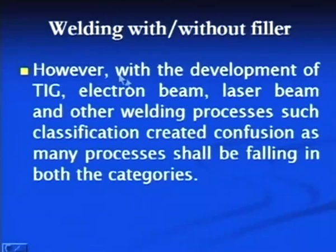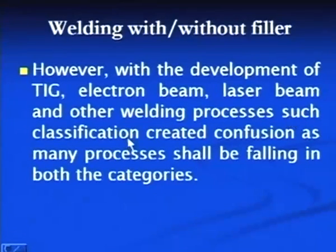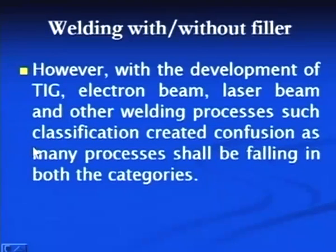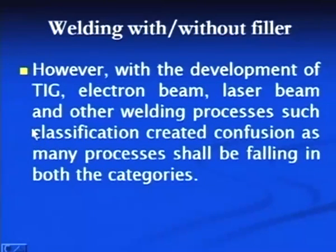However, with the development of processes like tungsten inert gas, electron beam welding, laser beam welding, and other welding processes, this classification created confusion as many processes fall in both categories. Many processes are such that filler metal may or may not be used, like in gas tungsten arc welding, plasma arc welding, and electron beam welding. Depending on material thickness or conditions, filler metal may or may not be used, and that is why this factor for classifying welding processes was not found to be very suitable.